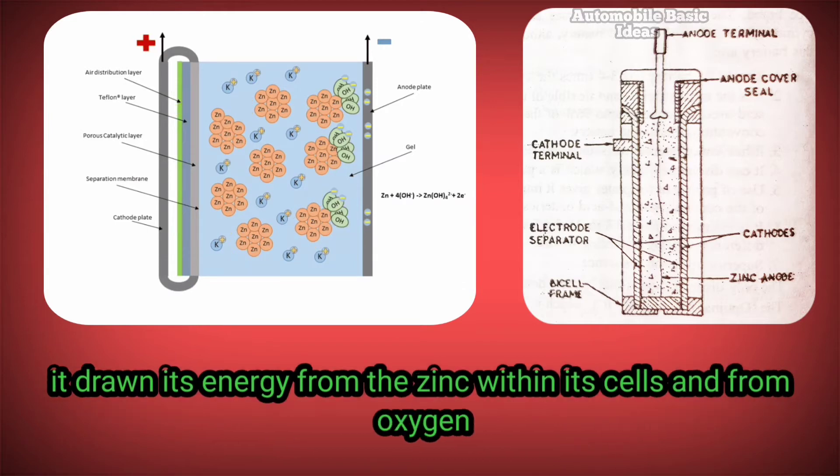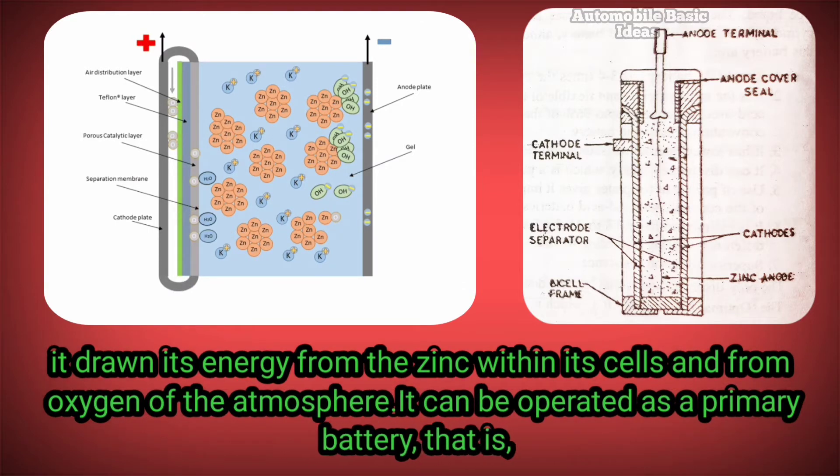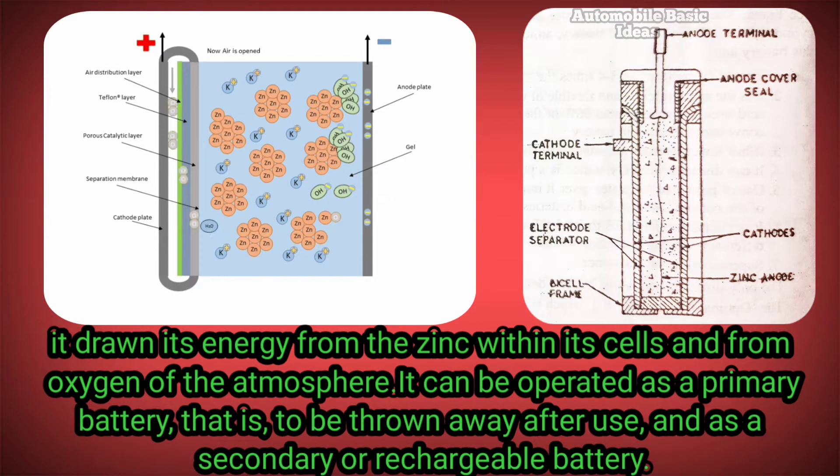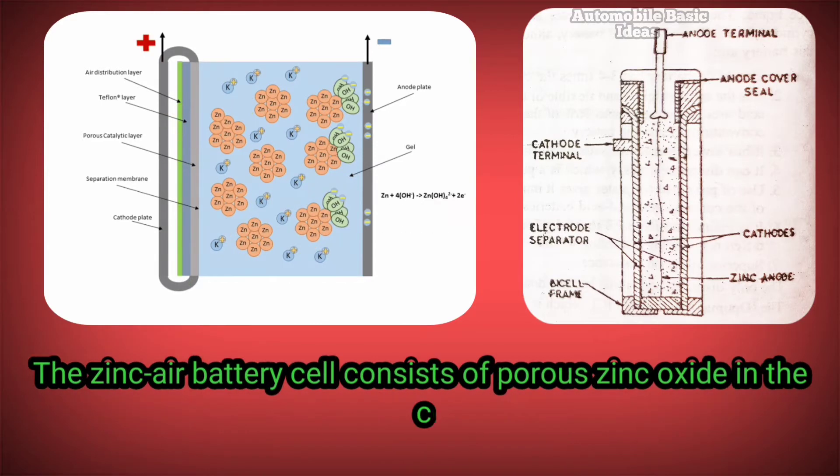and from oxygen of the atmosphere. It can be operated as a primary battery to be thrown away after use, or as a secondary rechargeable battery. The zinc-air battery cell consists of porous zinc oxide in the center